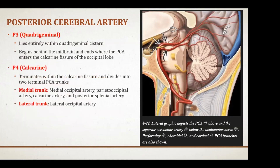The P3 or quadrigeminal segment of the PCA lies entirely within the quadrigeminal cistern. It begins behind the midbrain and enters where the PCA enters the calcarine fissure of the occipital lobe. Then you have the P4 or calcarine segment, which terminates within the calcarine fissure and divides into the terminal PCA trunks — a medial trunk and a lateral trunk — that supply the occipital lobe.